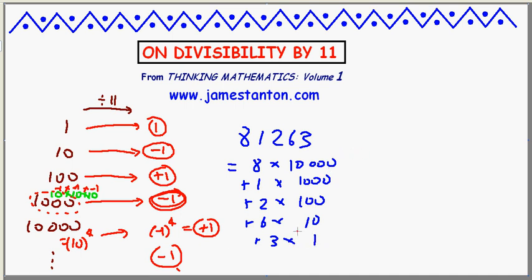And I'm going to ask, what happens when I look at their remainders upon division by 11? Well, 10,000 leaves a remainder of... plus 1, what am I saying? 1,000 leaves a remainder of negative 1. 100 leaves a remainder of plus 1. 10 leaves a remainder of negative 1. 3 leaves a remainder of plus 1. Sorry, 1 leaves a remainder of plus 1. So, basically, upon division by 11, I could see that this number leaves the same remainders 8 groups of plus 1, and 1 group of negative 1, and 2 groups of plus 1, and 6 groups of negative 1, and 3 groups of plus 1.